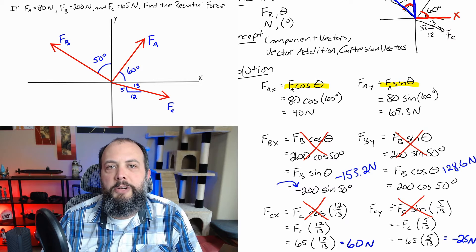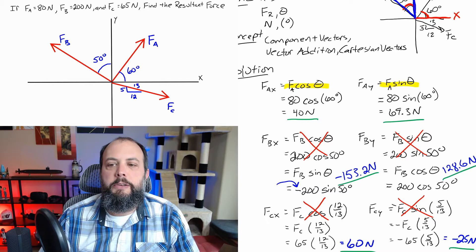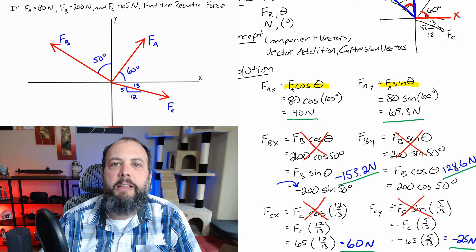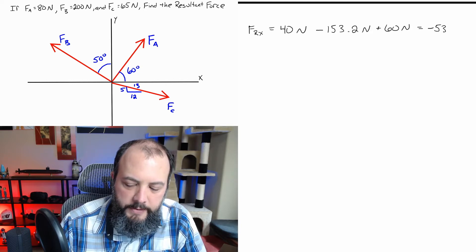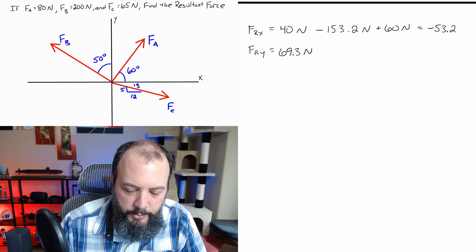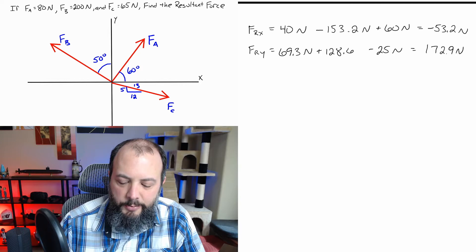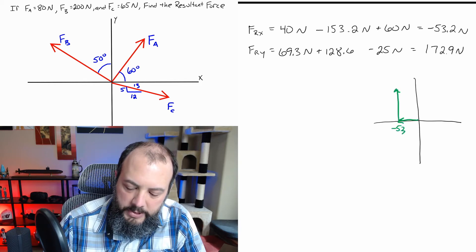At this point we've found component vectors for each of the three initial forces. We just need to add them: the three x components and the three y components separately. In x: 40 + (−153.2) + 60 = −53.2 newtons. In y: 69.3 + 128.6 + (−25) = 172.9 newtons.